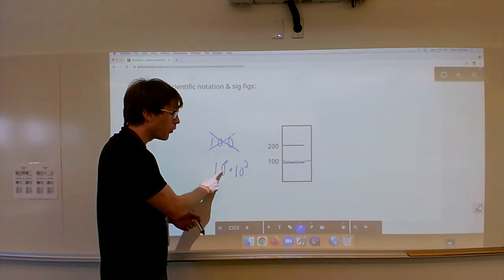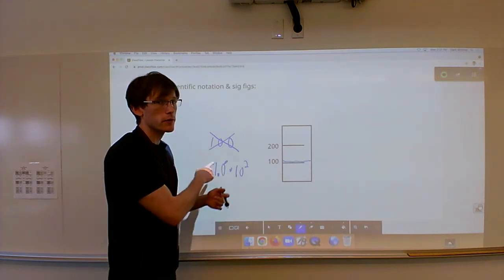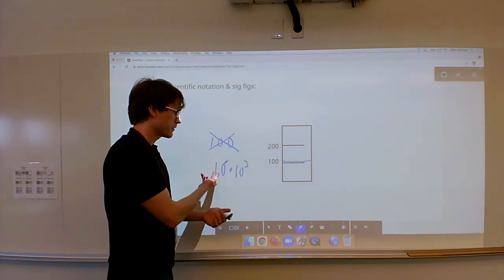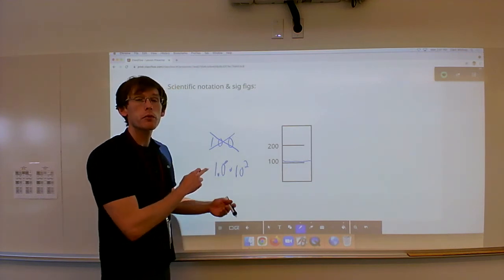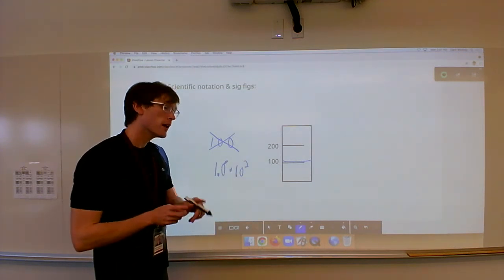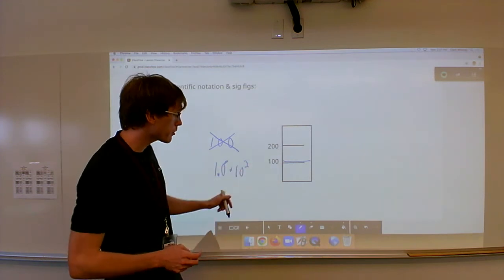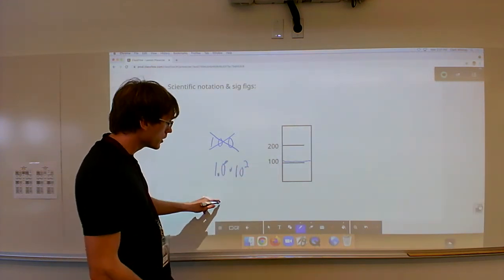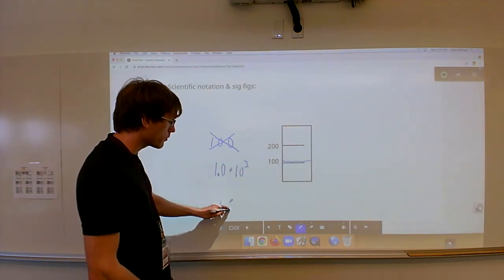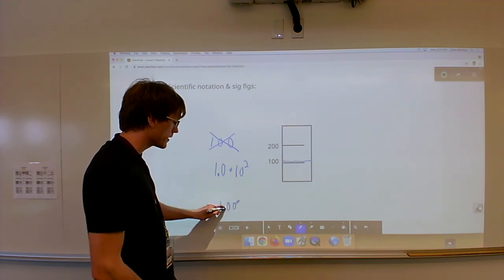If I want one of the 0s to be significant and the other one not to be significant, I can just put 1.0 times 10 to the second. If I had something with more precision, if all the 10s were put in, then I could just write in 1.00 times 10 to the second.